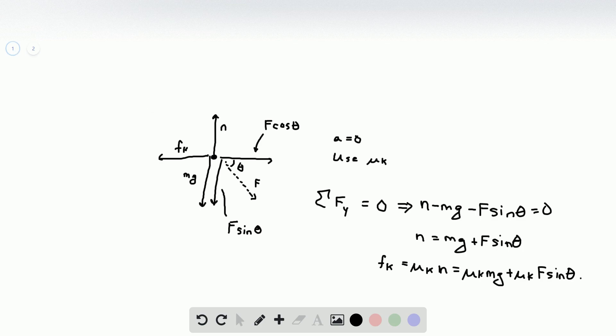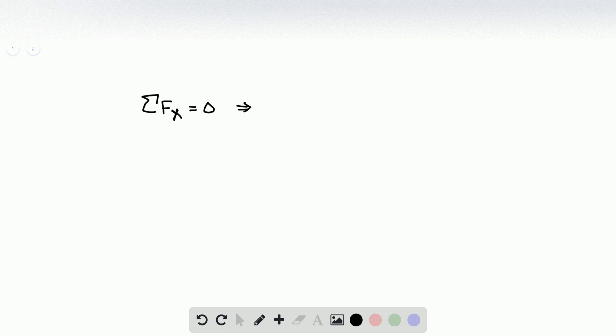Now we're going to do the sum of the forces in the X direction. This is also going to be equal to zero. If we look back here at our forces, we have the F cosine theta and we have the friction force. This implies that F times cosine theta minus friction force is equal to zero. We found the friction force before, so I'm just going to plug in that expression, so I get F cosine theta minus μk mg minus μk F sine theta is equal to zero.